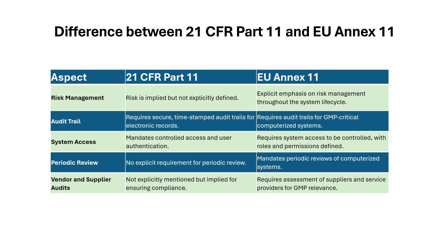In conclusion, 21 CFR Part 11 and EU Annex 11 both ensure compliance for electronic systems in regulated industries, but differ in scope and focus. 21 CFR Part 11 is specific to FDA regulated industries, focusing on electronic data and signatures, while EU Annex 11 applies to GMP regulated systems in the EU, emphasizing system lifecycle validation. Key differences include explicit risk management and periodic review requirements in Annex 11, as well as its broader scope covering the entire system, including vendor audits and training documentation.